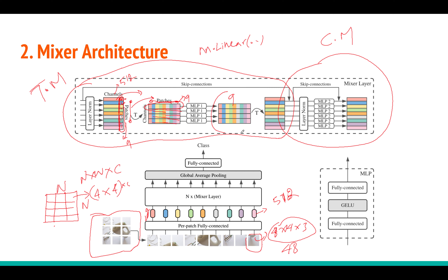Once you get this output, you transpose it back to get the same size matrix: channel dimension is 512 and patch dimension is 9. That is all about the Token Mixer. To summarize: you take matrix X, transpose it, apply a shared linear layer across all vectors, then transpose the result back to the original dimension — that is the output of the Token Mixer. There is also a skip connection going from the input directly to the output, similar to a residual network, and I will show you this in the code.